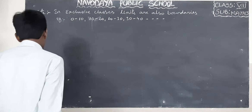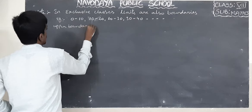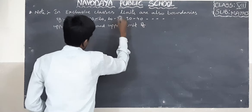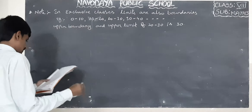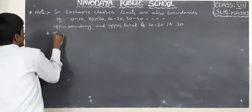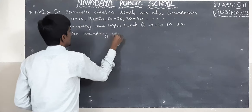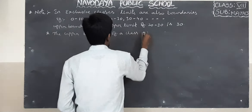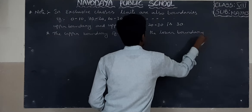In exclusive classes, the upper boundary and upper limit of a class are the same. Also note: the upper boundary of a class is the lower boundary of the next class.